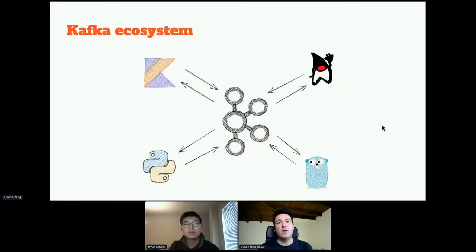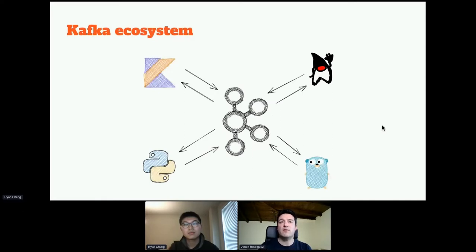One of the particularities of Kafka is how much it relies on the clients. Both Kafka brokers and clients work together to achieve better performance — that's one of the key components of Kafka and one of the reasons why Kafka is so good. It works really well, but it also makes monitoring Kafka much more complicated.